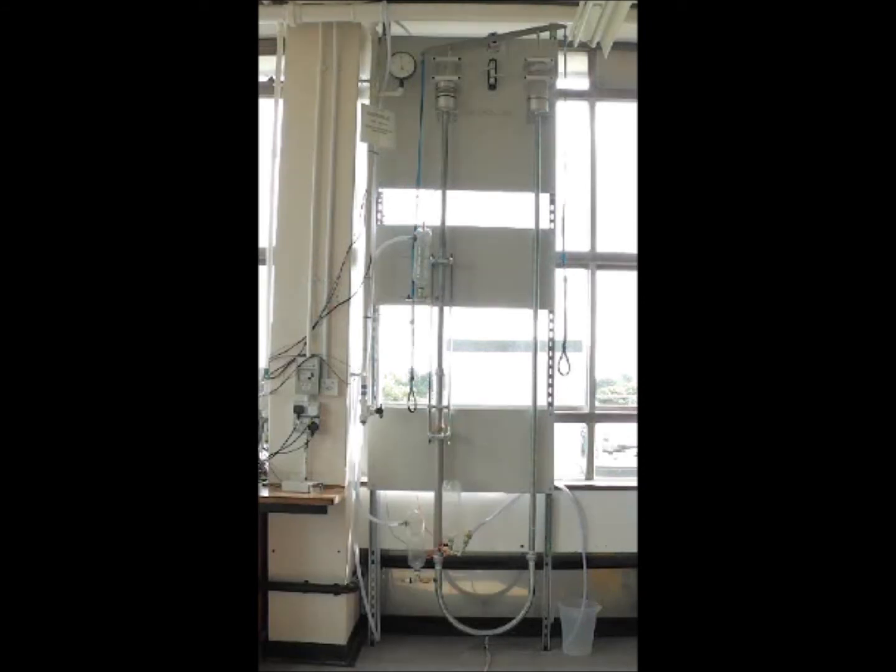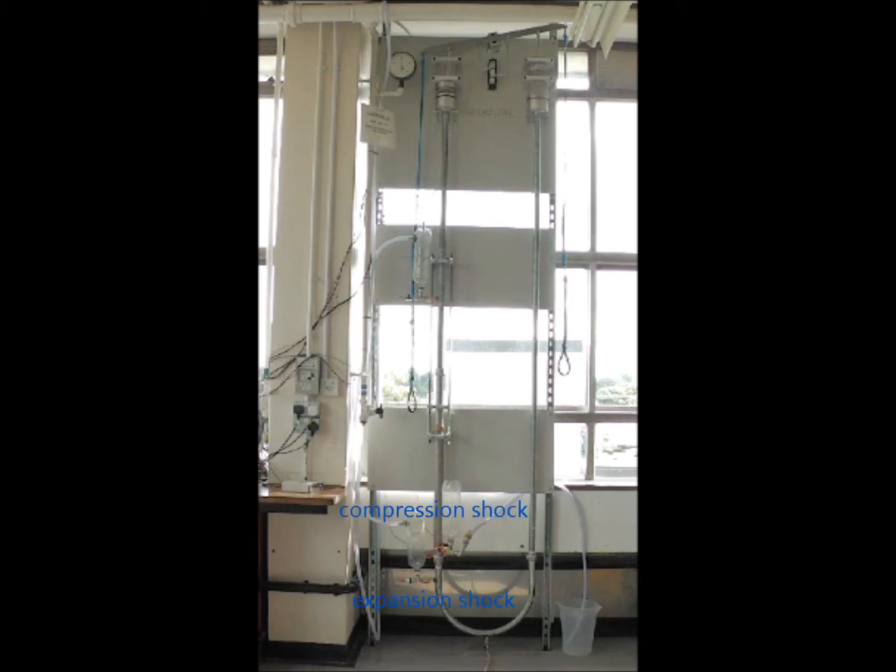I can then reverse the stroke by pulling down the left-hand side piston, blocking the flow in the other direction. This now generates a compression wave upwards and expansion wave downwards. Water is discharged through the outlet in the same manner as before, but this time water is drawn in from the other inlet reservoir.